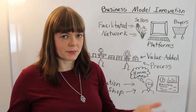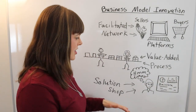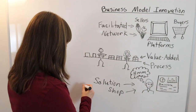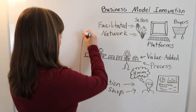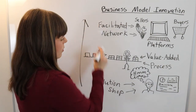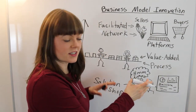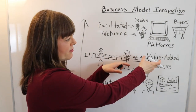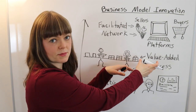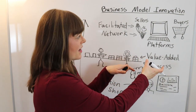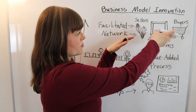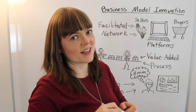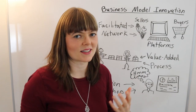So why does business model innovation tend to happen in this upward direction, where businesses start as solution shops, then move to value-added process businesses, and then in the most recent iteration, move to facilitated network businesses?